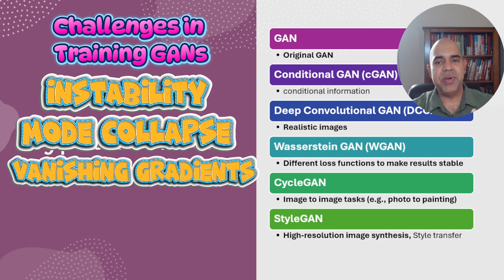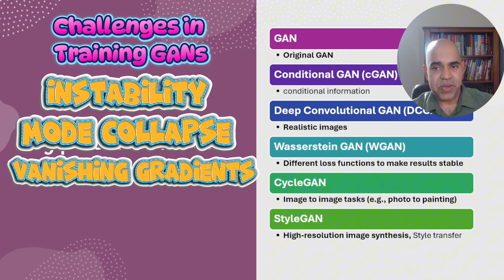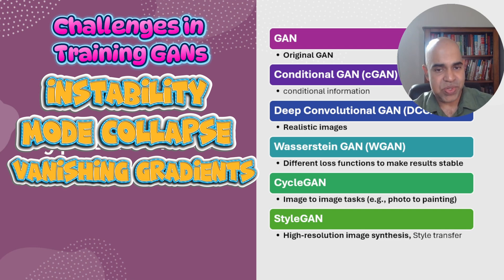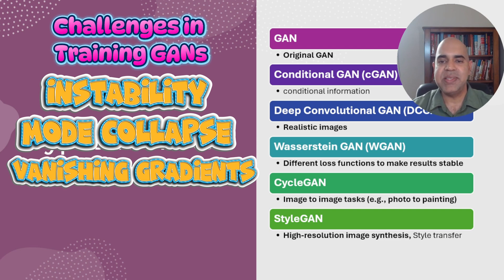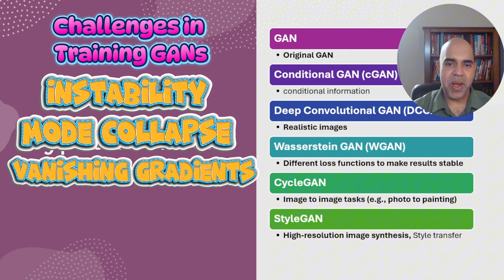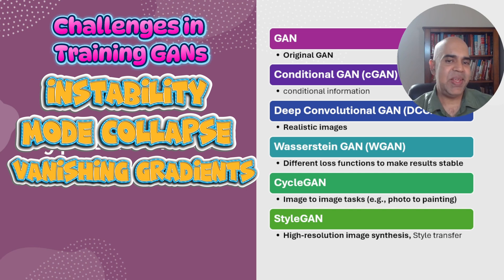Generative Adversarial Networks have opened up new frontiers in creative and data-intensive fields. The ability to synthesize high-quality realistic data has applications ranging from entertainment to critical sectors like healthcare and finance. As GAN technology continues to evolve, we are likely to see more refined models that generate even more complex and diverse data with improvements in training stability and efficiency. In the description section, I will provide a link to a video that demonstrates Python PyTorch coding to create a simple GAN application. Thank you for watching, see you soon in another video.